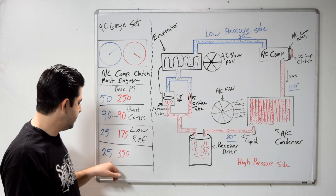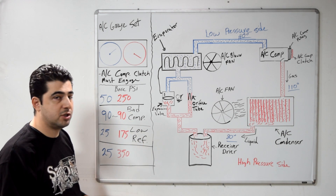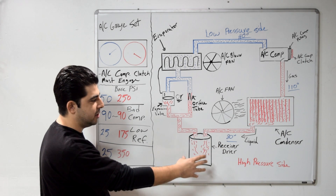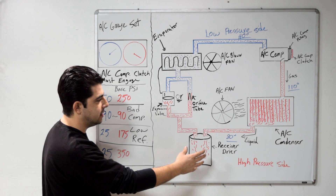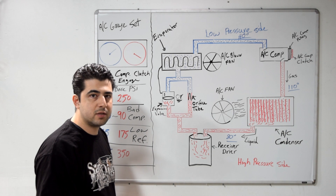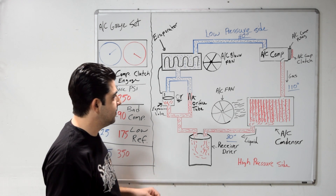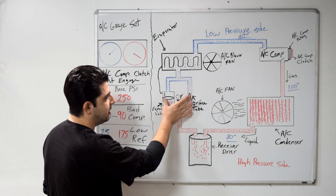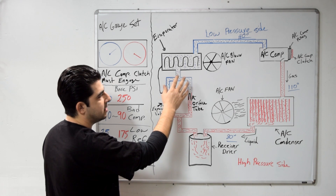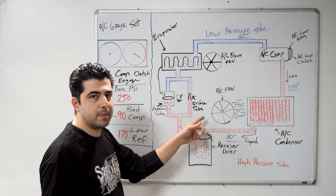In the third scenario, if you get 25 on the low side — lower than base pressure — but 350 on the high side, which is much higher than base pressure, that means something on your high pressure side is clogged and pressure can't relieve at its normal rate. The most likely culprit is your expansion valve or orifice tube, since that's where the smallest opening is in the system. These are susceptible to clogging, causing pressure to build up on the high side while the low side drops below normal. To fix this, you'll need to replace your expansion valve or orifice tube depending on your vehicle.